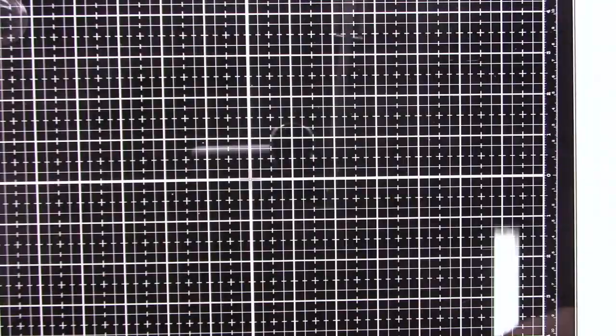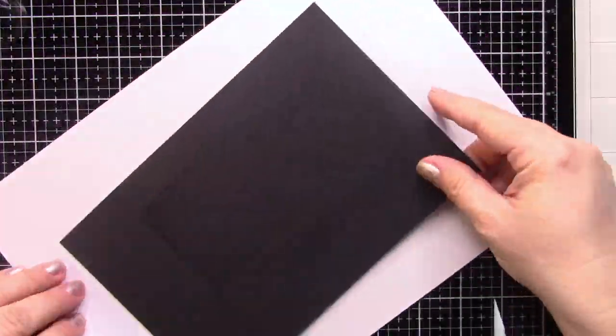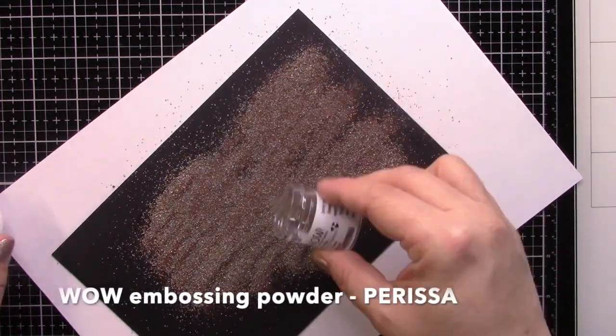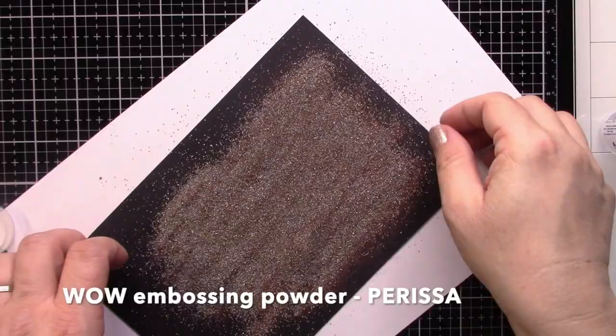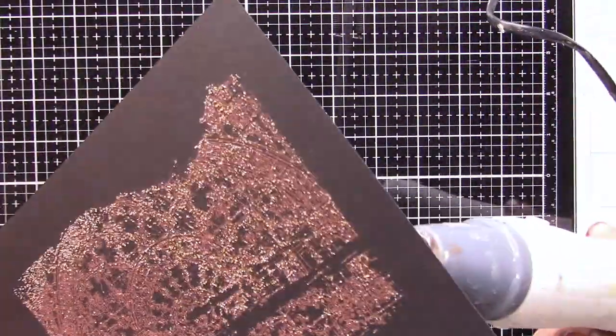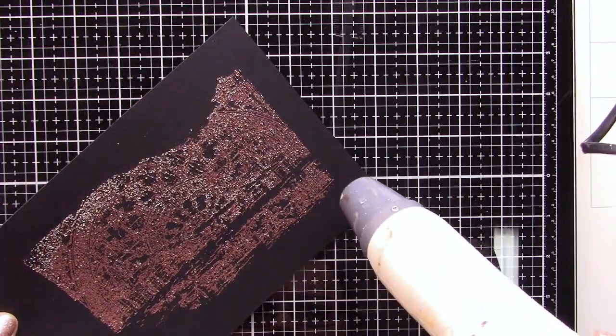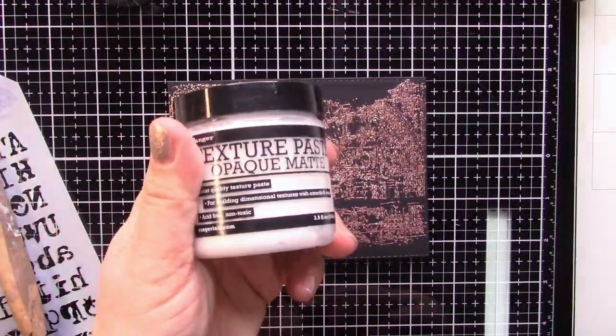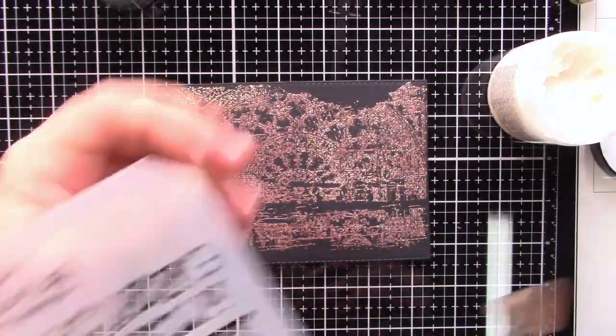I will be using just one embossing powder and one distress glaze later on. As you can see, I'm applying powder all over my background. I will cut the card from this piece of paper. I usually start with a bigger piece of paper and then cut it.